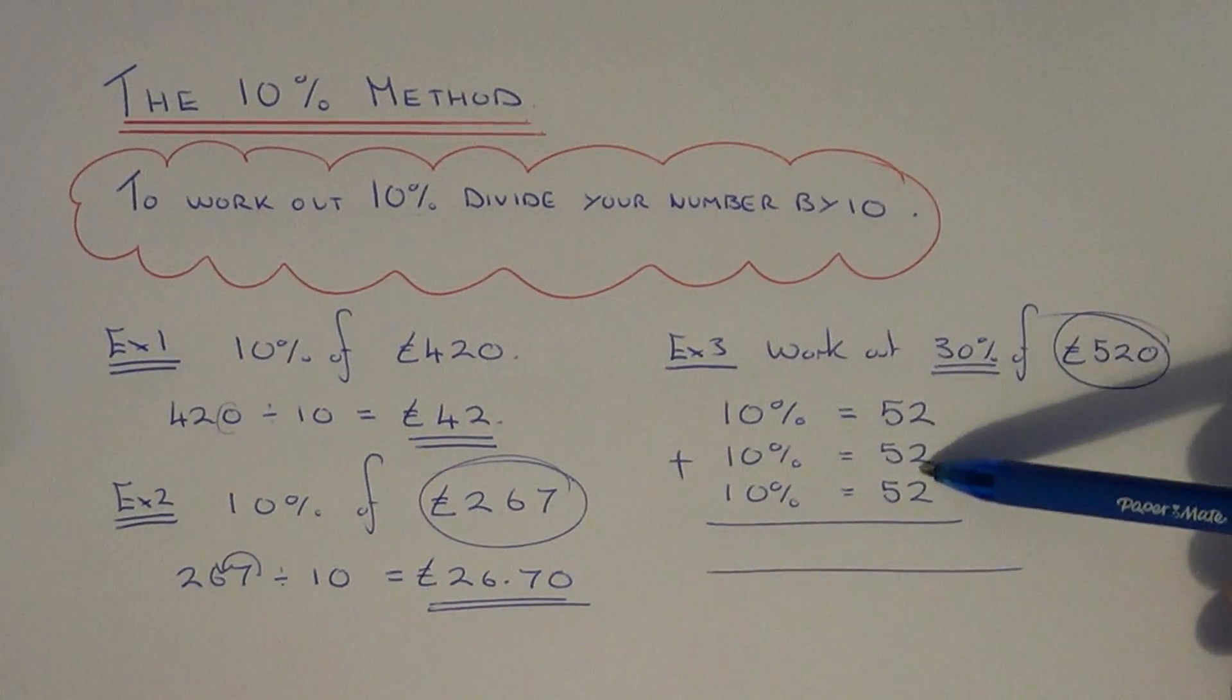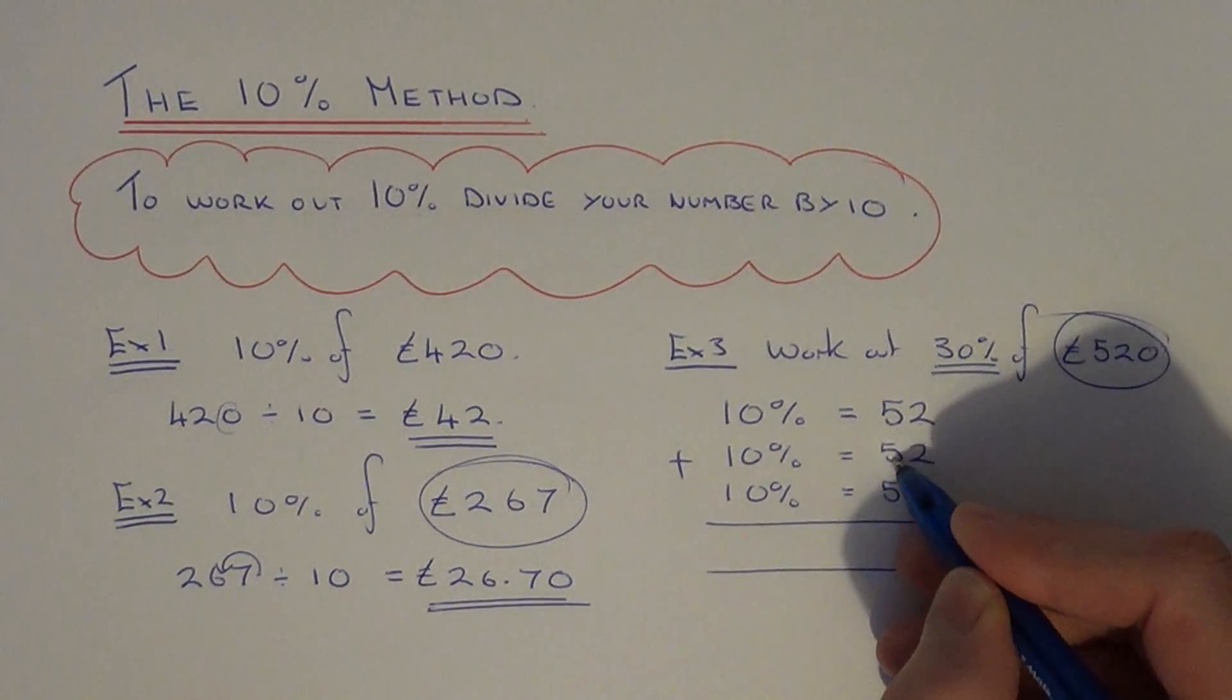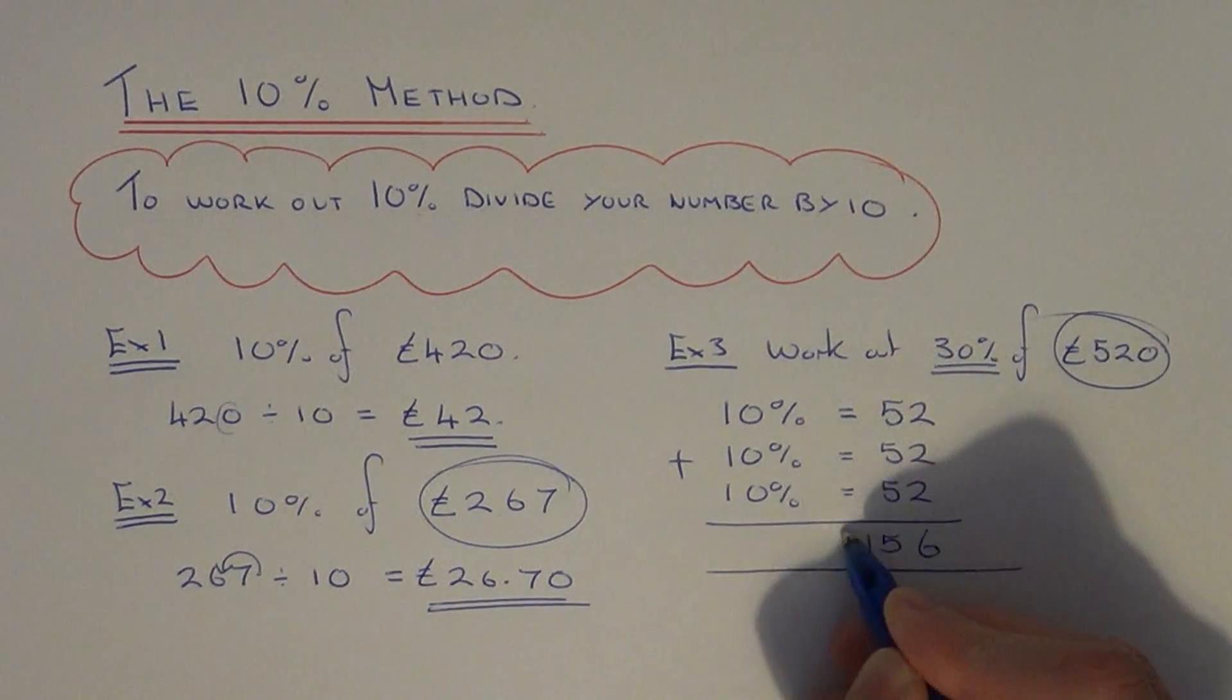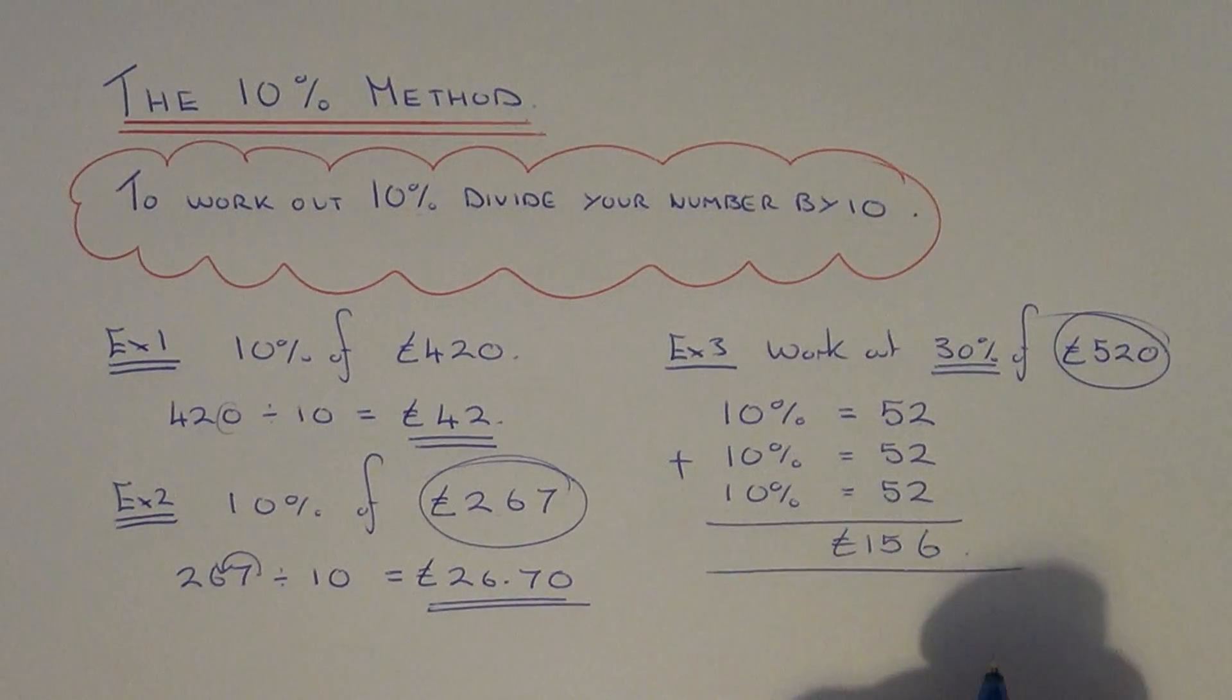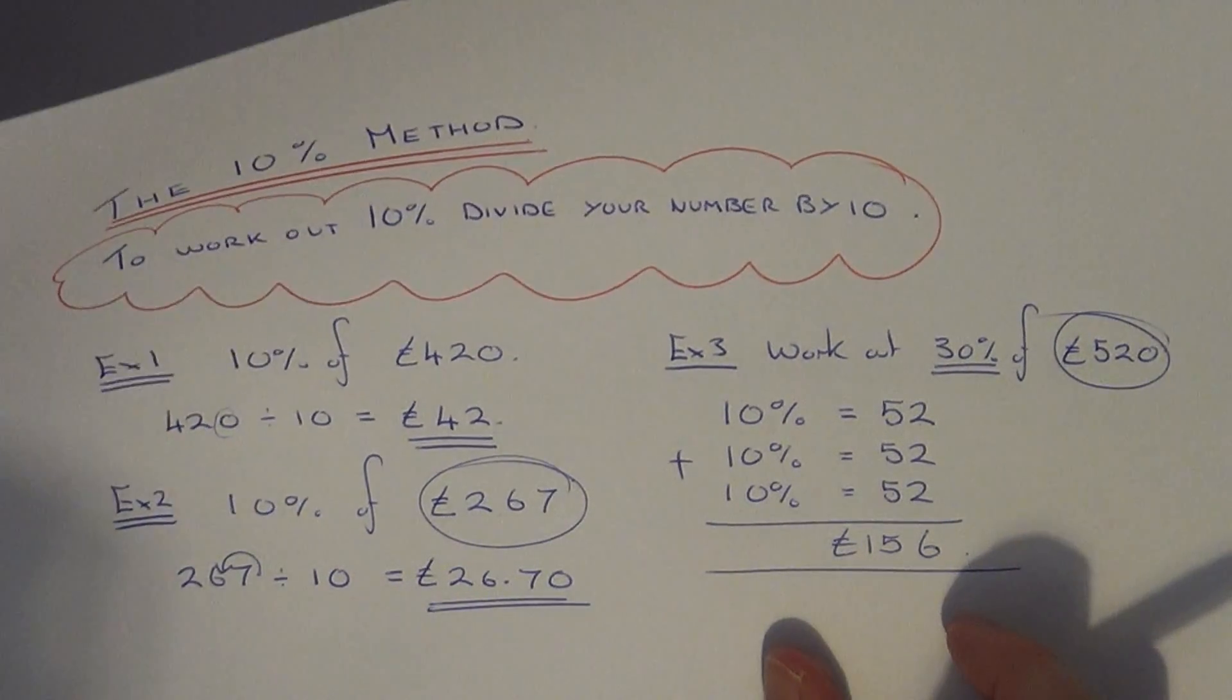So if you add these three numbers up we get 2, 4, 6, 5, 10, 15. So you get £156. So let's move on to another example.